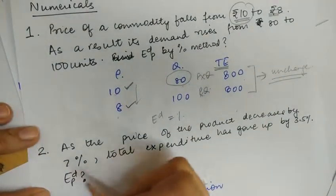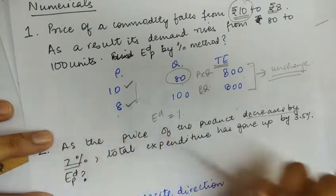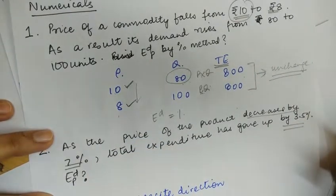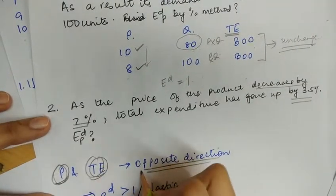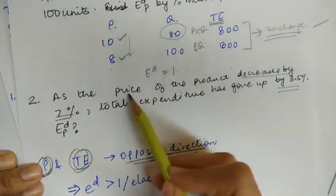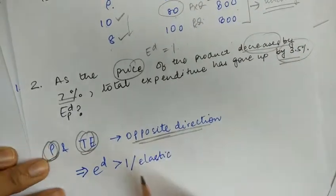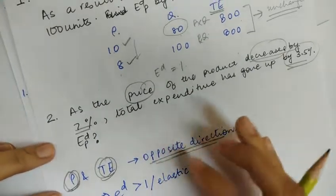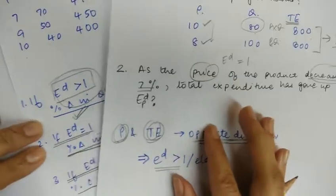For the second numerical: as the price of a product decreases by 7%, the total expenditure goes up by 3.5%. This indicates that price and total expenditure are moving in the opposite direction — price is falling while expenditure is going up. When this happens, the elasticity of demand is greater than one, meaning demand is elastic.